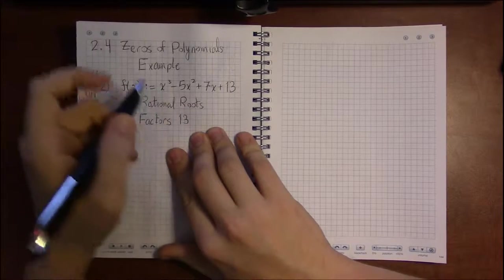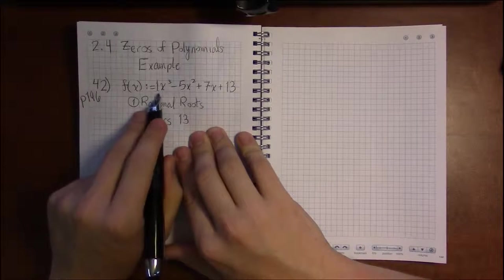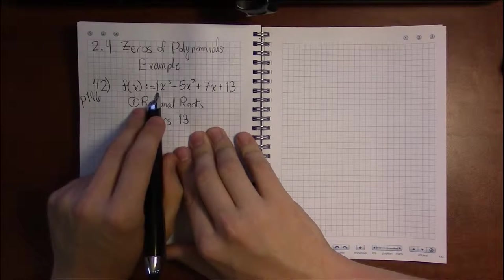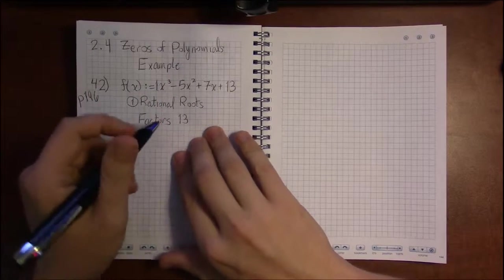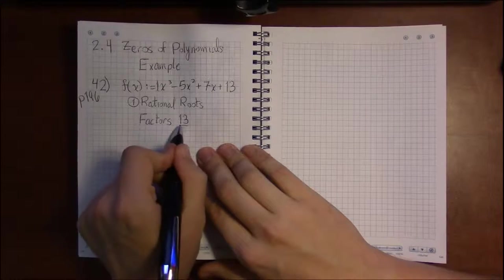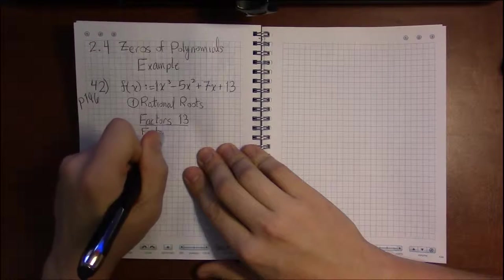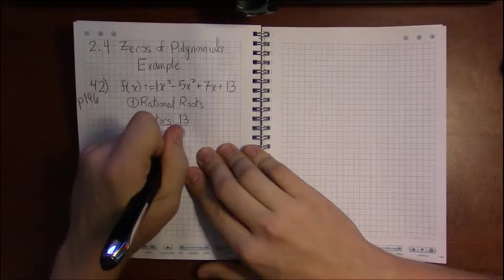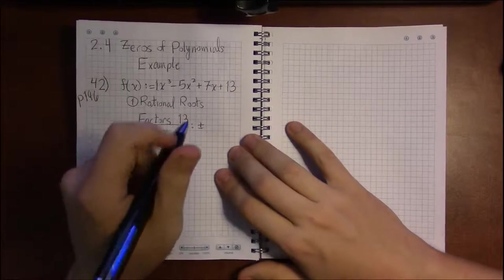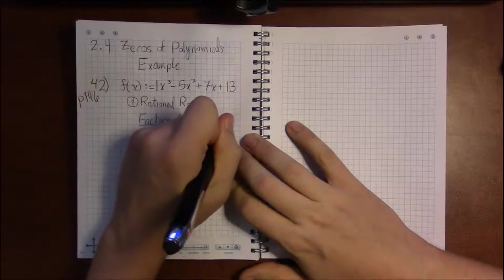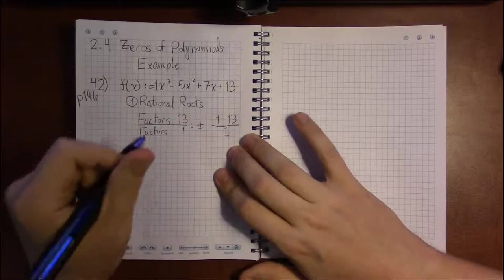Which in this case is 1, because since there's no number there, putting 1 in front doesn't change anything. Our leading coefficient is 1 and that goes on the bottom. Our constant term, 13, goes on top. The factors of 13 are just 1 and 13, and the factors of 1 are simply just 1.